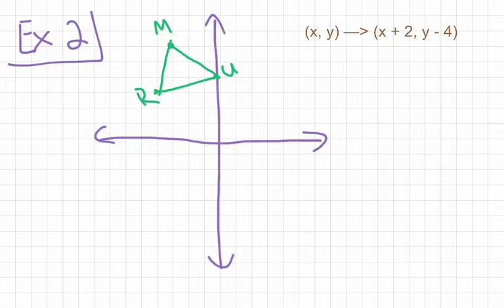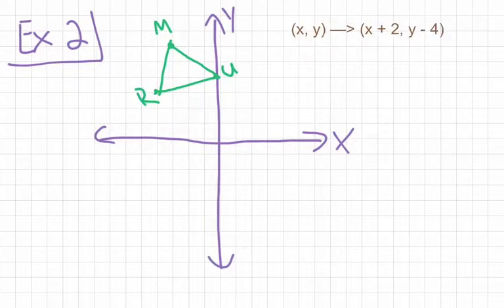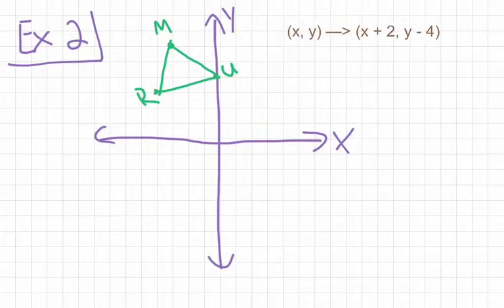When we take x plus 2, we need to think about, which direction are we moving? Are we moving up, down, left, or right if we're adding 2 to our x values? Our x values are here. So that means that we're moving our x values left or right. If we're adding 2 to our x value, that means we're moving each point two units to the right. Then y minus 4, we have our y values here. y minus 4 tells us that we're going to be moving each figure down four values. So x plus 2 means right 2. y minus 4 means down 4.